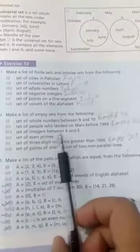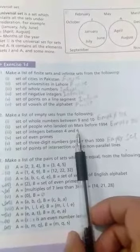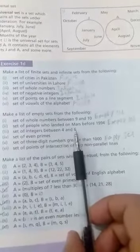Set of integers between 4 and 6. 4 and 6 ke dhrmiyan integers ka set. Now, this is not an empty set because we have 5 in between 4 and 6.